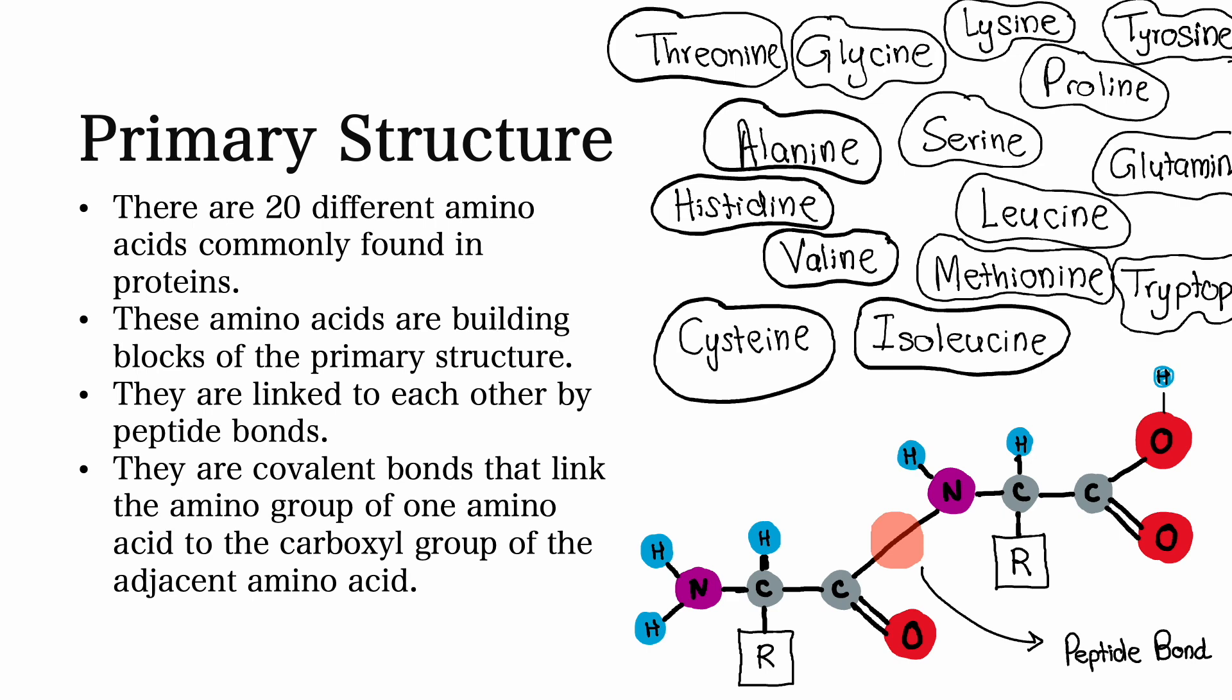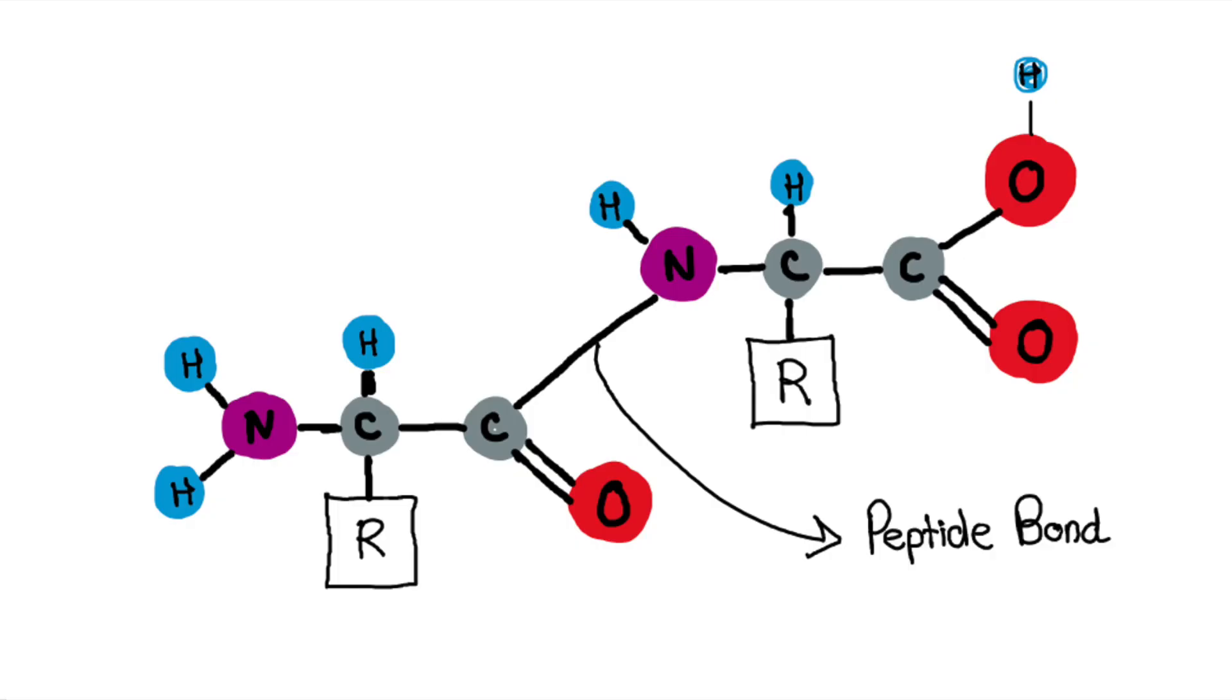They are linked together by peptide bonds. Peptide bonds are covalent bonds. They link the amino group of one amino acid to the carboxyl group of the adjacent amino acid.